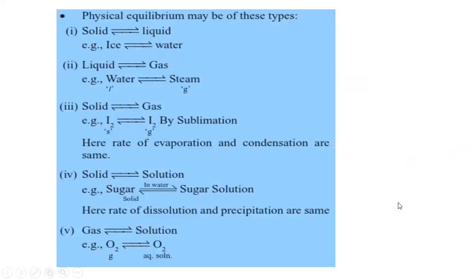More examples of physical equilibrium: the change of water from solid to liquid is called melting. Water changing from liquid to gas is called evaporation or vaporization or boiling. From solid to gas is called sublimation — for example, iodine changing from solid to gas. Sublimation is a process whereby a substance changes from solid to gas without passing through the liquid state.